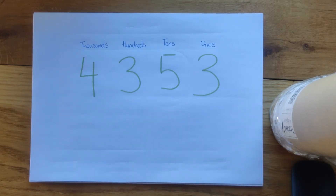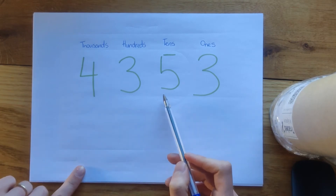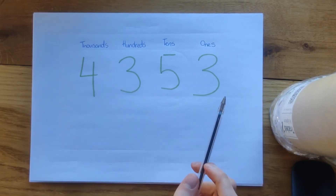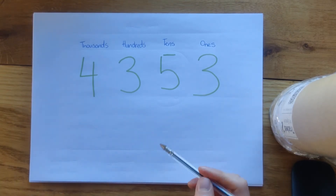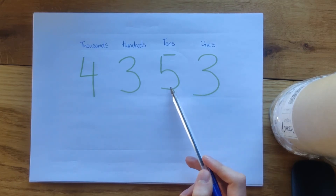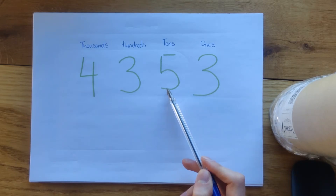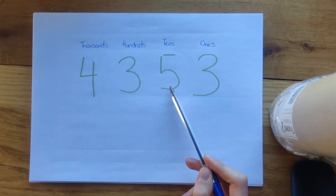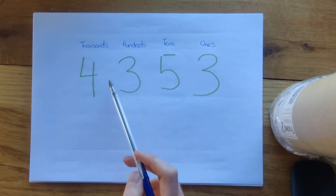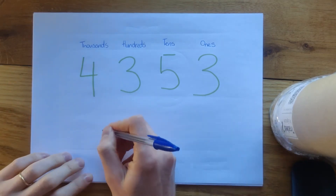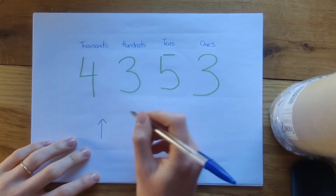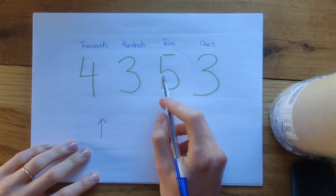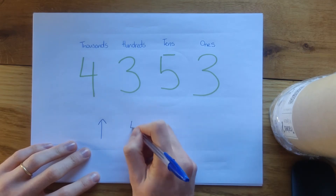What would be right in the middle of 4,300 and 4,400? We need to think: what is half of a hundred? Half of 100 is 50. So if we've got more than 50 in the tens, it goes up to 4,400; if we've got less than 50, it goes down to 4,300. We look at the tens column — we've got exactly 5 in the tens column. When rounding, if it's 50 or higher, it gets rounded up, so we're going to round up to 4,400.